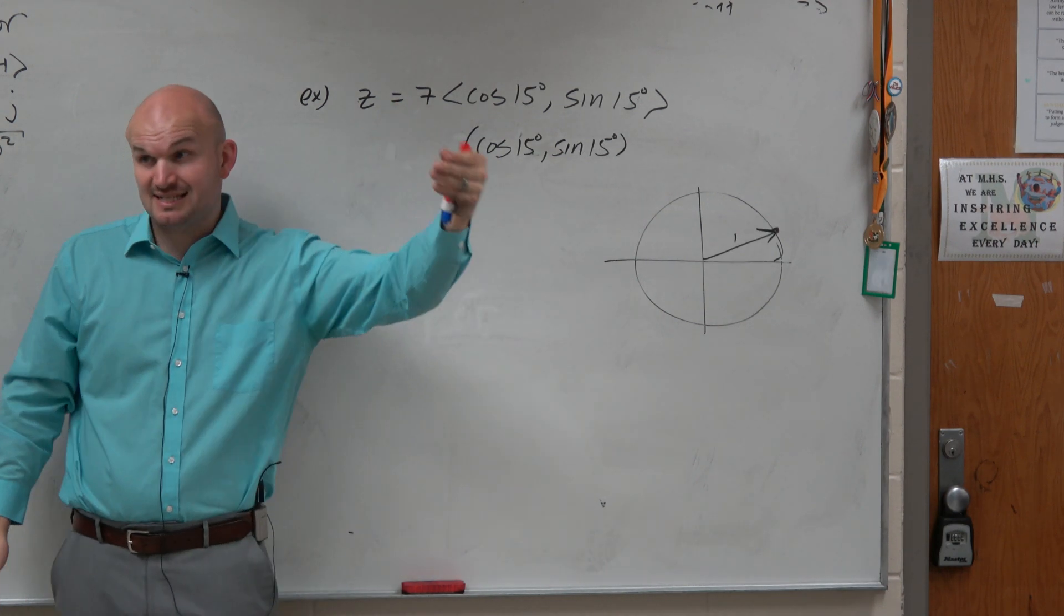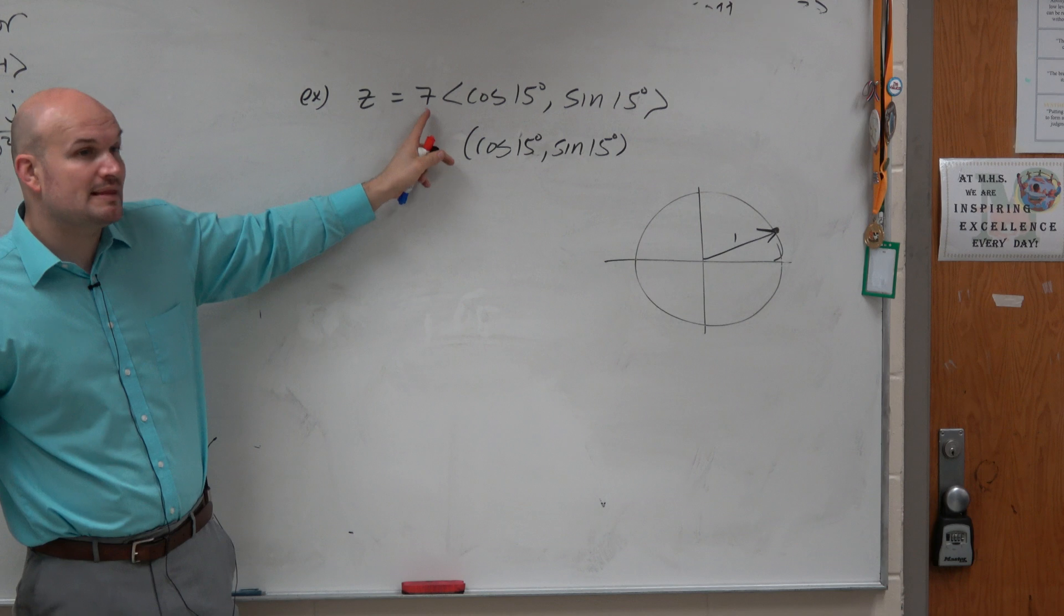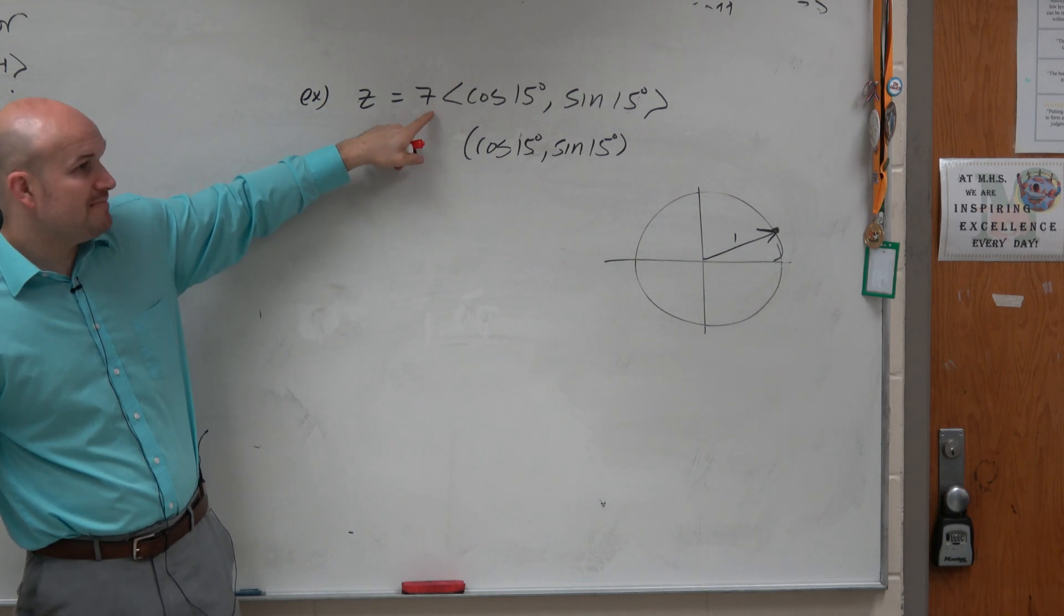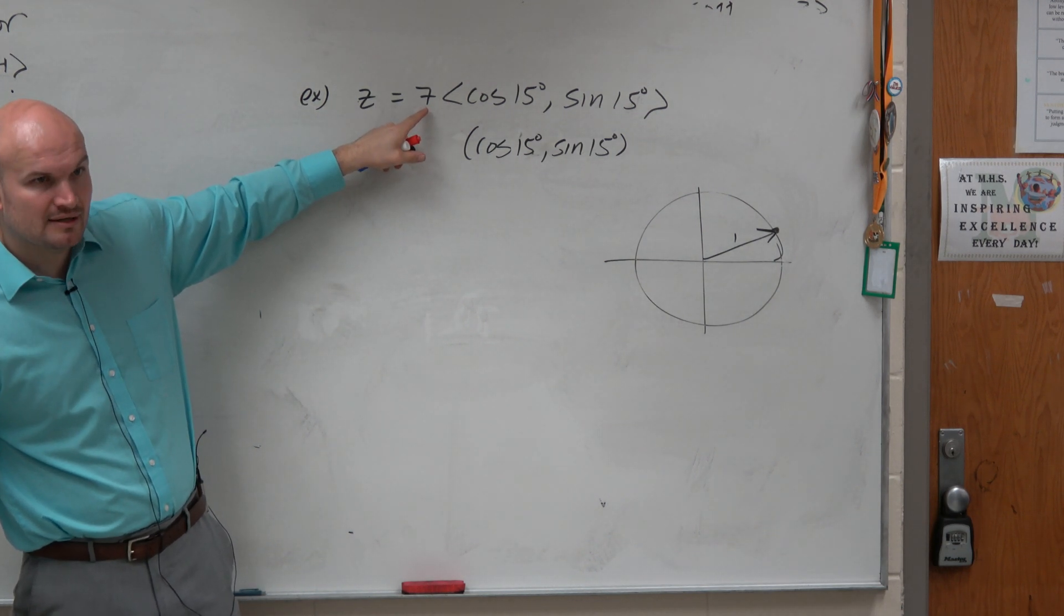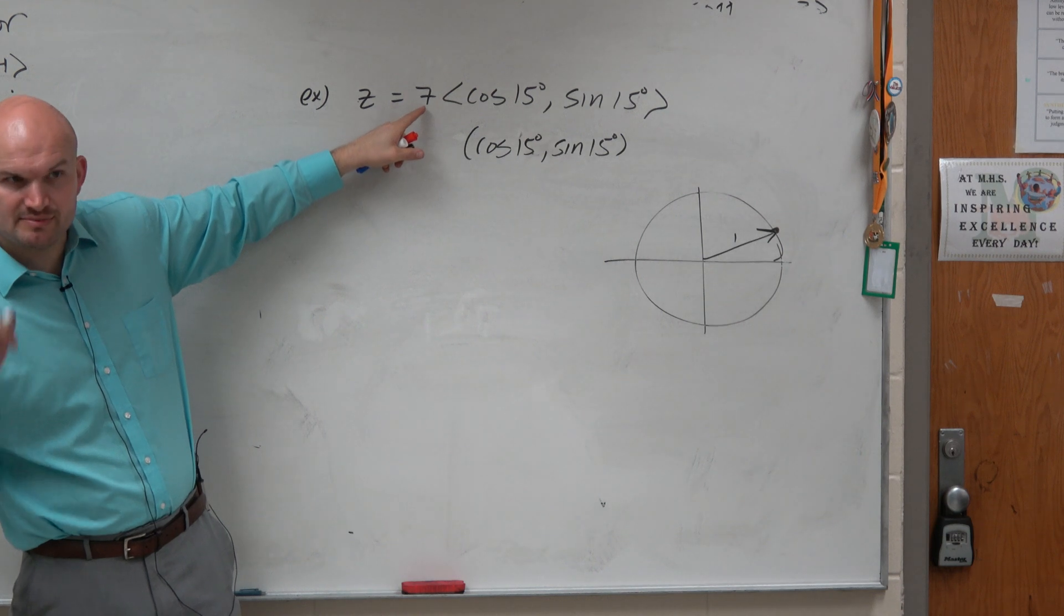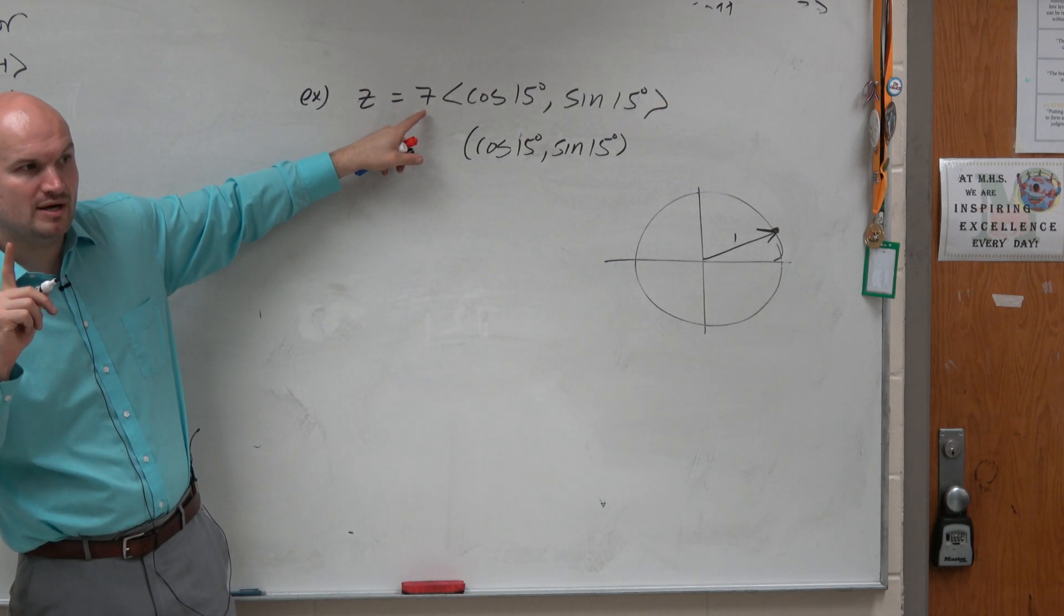the 7 on the outside is, yes, it's a scalar, but it's also what the magnitude is of this vector. So the magnitude of this vector is 7. We don't want the magnitude to be 7. We want this to be a unit vector, meaning we only want the magnitude to be 1.